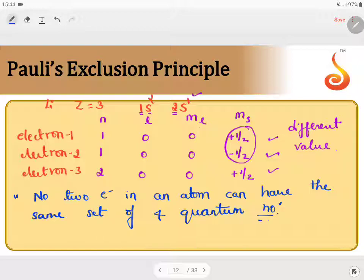That means for each and every electron, the set of quantum numbers are different in an atom. Assume that in an atom there are 100 electrons. For all the 100 electrons, you will get different sets of quantum numbers. That's the beauty of, or that's the need of, studying this quantum number.